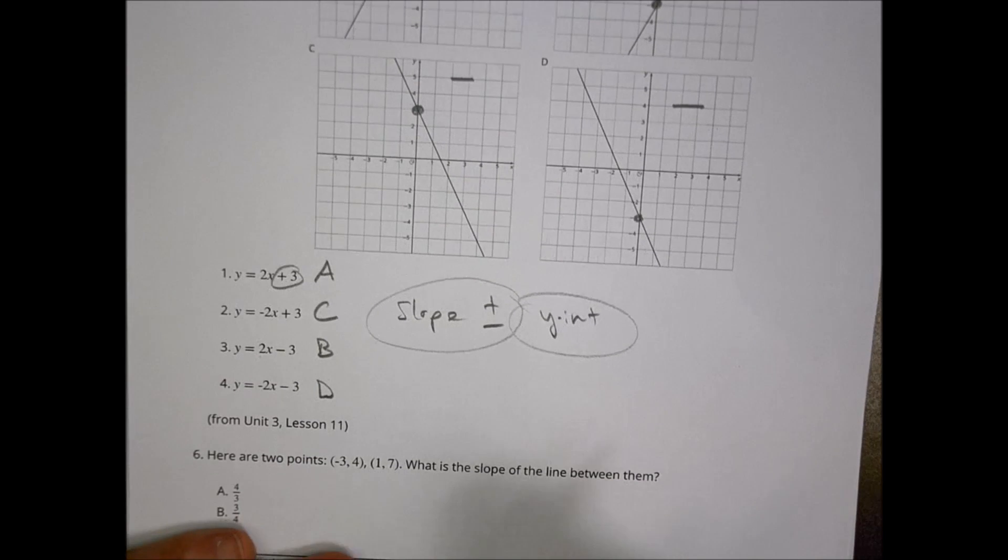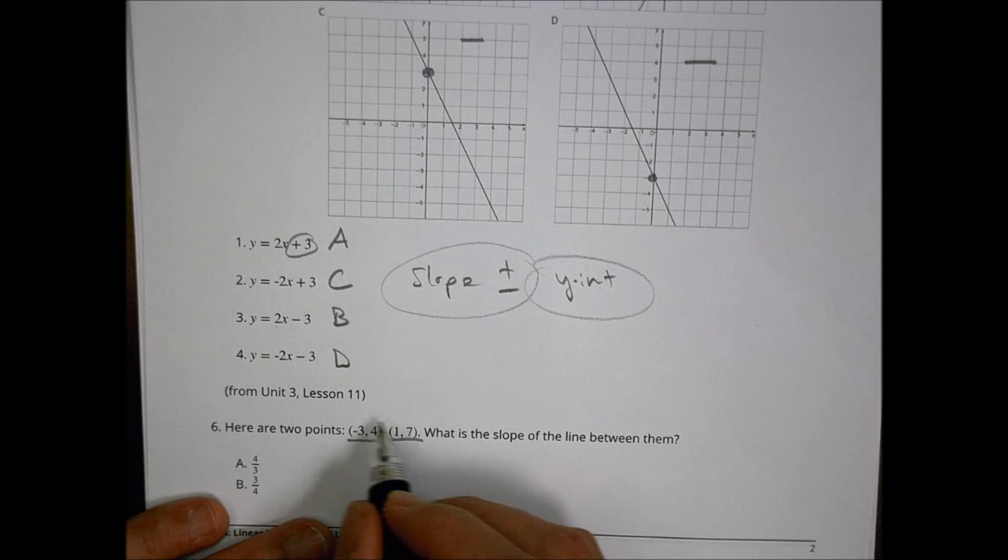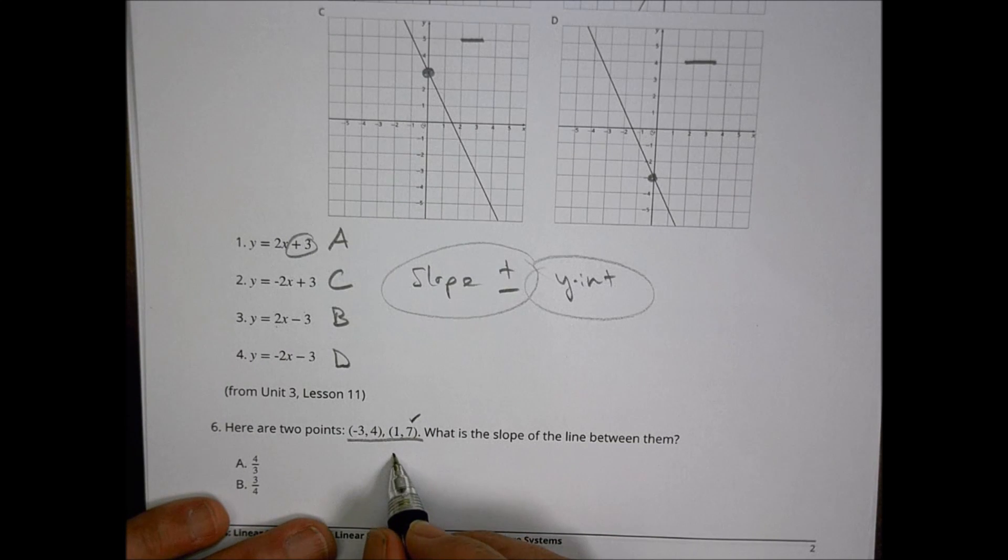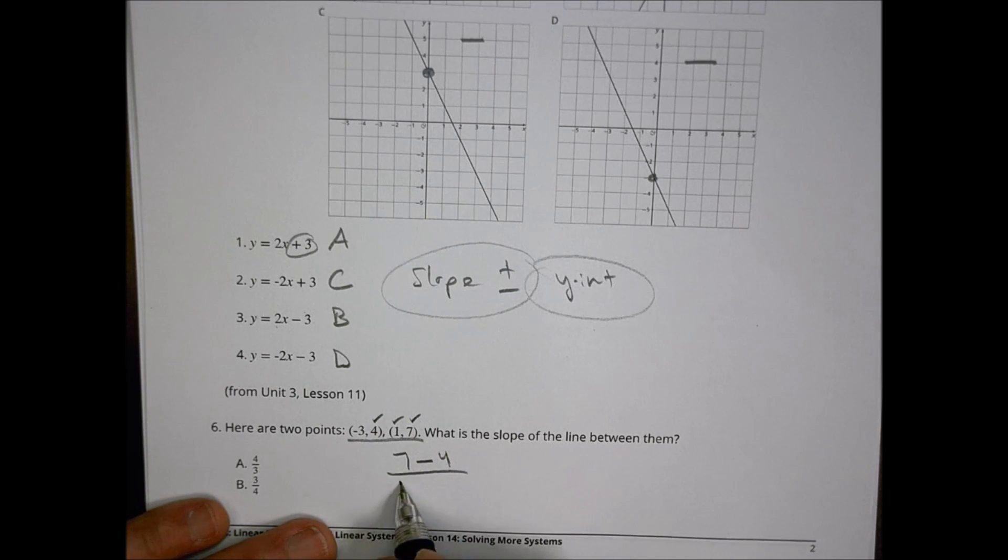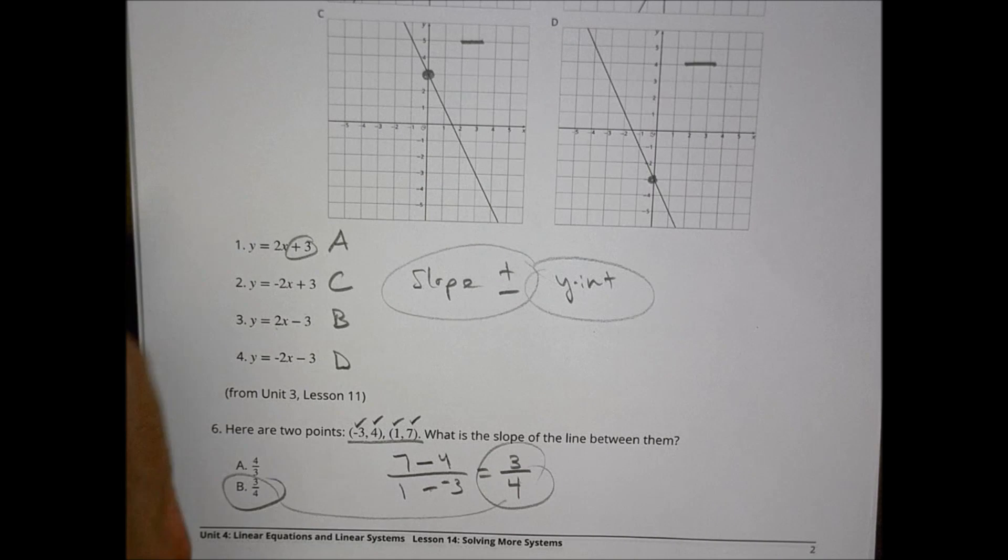And finally, number 6. Here are two points. What is the slope of the line in between them? To find the slope, we're going to do our y. We'll do the second y minus the other y. 7 minus 4, divided by the x minus the other x. Just keep the order the same, and you'll be fine. 7 minus 4 is 3, and 1 minus the minus 3 is plus. So we get 3 fourths there, which matches choice B. I don't need to turn the page to see what the other choices are because they're all wrong. B is the right one.